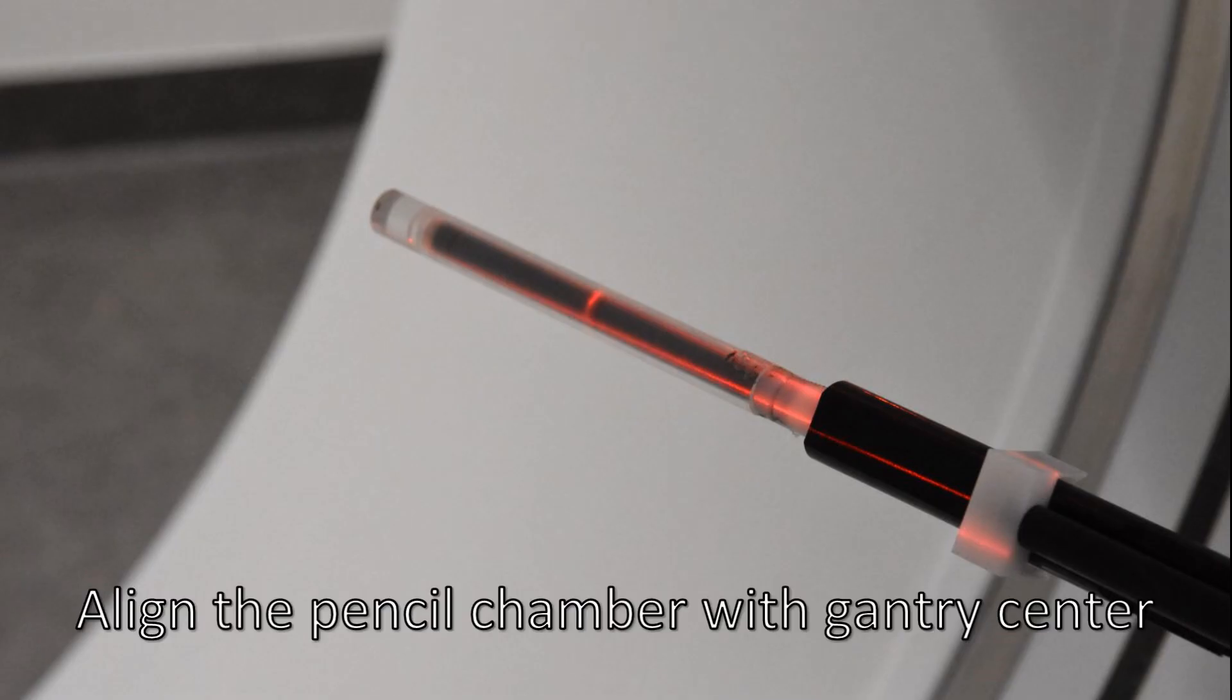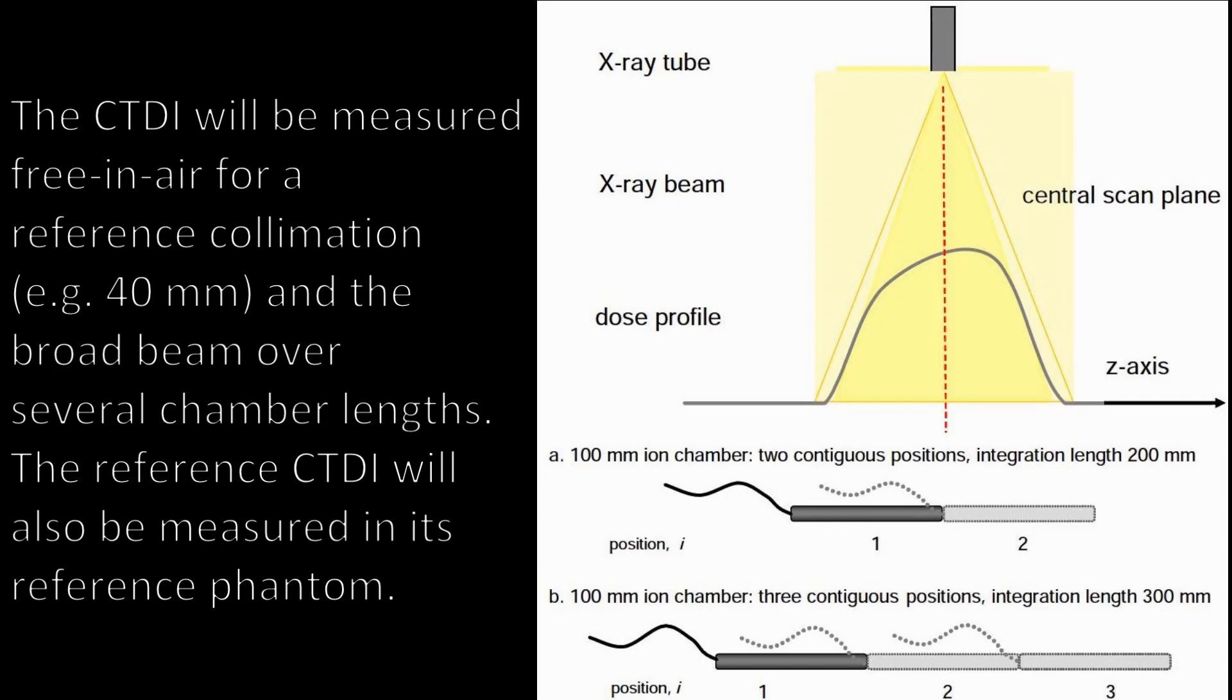Align the pencil chamber with gantry center. The CTDI will be measured free in air for a reference collimation, for example 40 mm, and the broad beam over several chamber lengths. The reference CTDI will also be measured in its reference phantom.